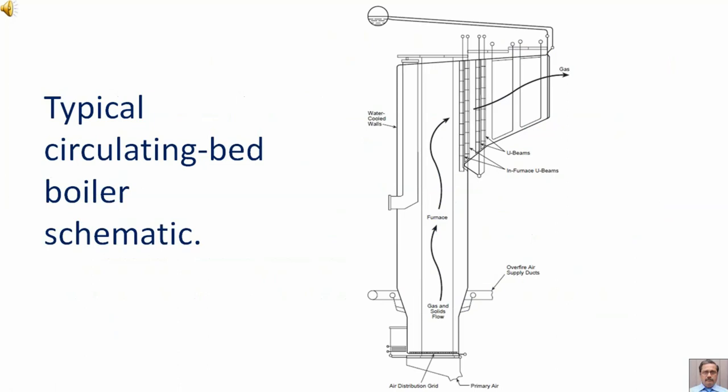Typical Circulating Bed Boiler Schematic. Here one can see that water cooled walls of the boiler are there. Primary air is entering at the bottom. And after that we are having air distribution grid. Gas and solid flow is shown with the help of the arrow. The main thing to be noted here is the presence of U-beams. We are having in furnace U-beams and external U-beams.